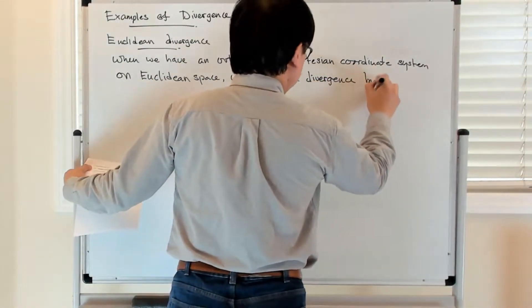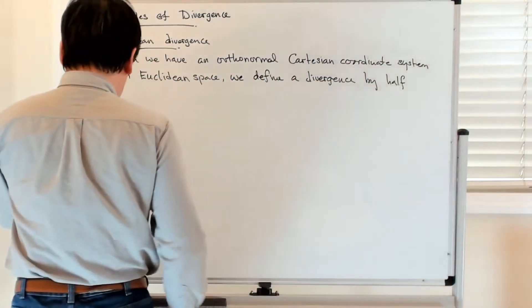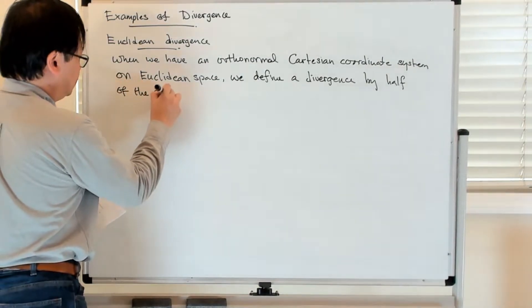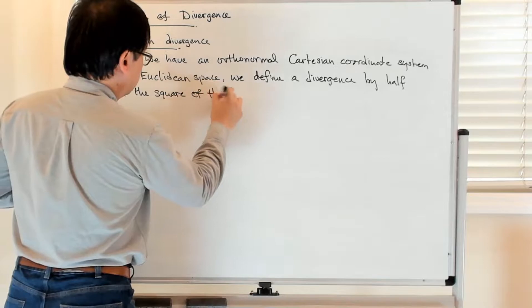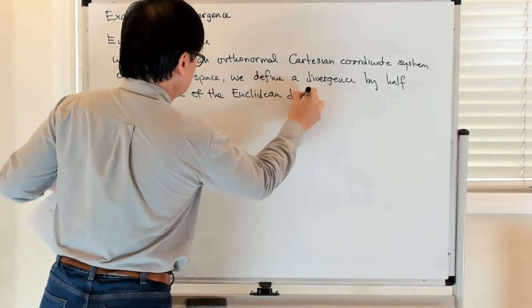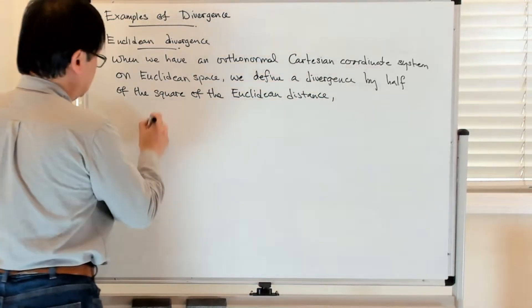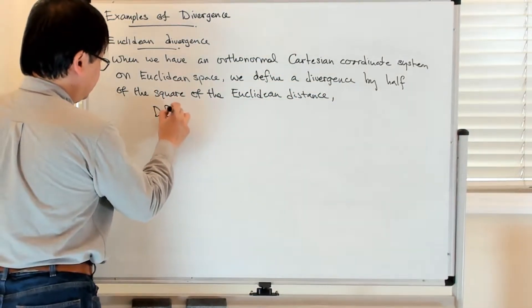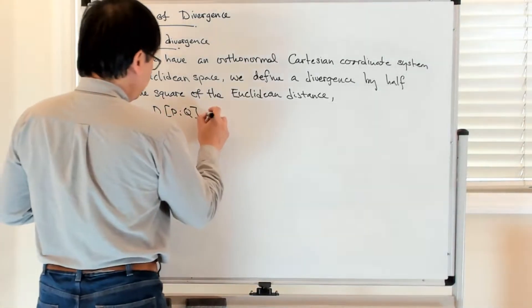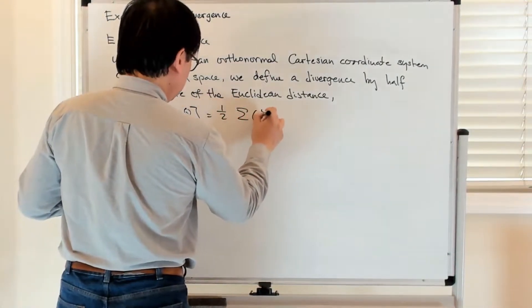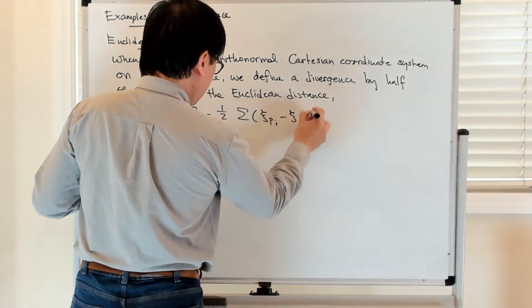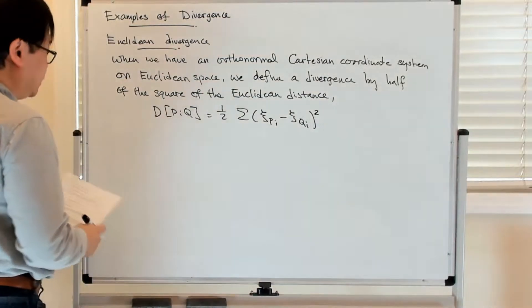By just half the square of the Euclidean distance. So the divergence between two points P and Q in this Euclidean space is just one-half the sum of (P_i - Q_i)² which is the usual squared Euclidean distance.